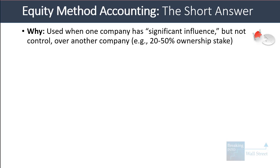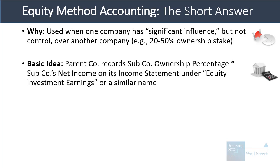In other words, the parent might have a 20 to 50 percent — really less than 50, so 49.9 — ownership stake. It's usually not used if it's below 20, though it can be sometimes, and above 50 the accounting method starts to differ again. The basic idea is that the parent company records the subco's ownership percentage times the subco's net income on its income statement under equity investments, or a similar name.